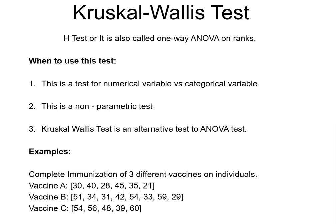The Kruskal-Wallis test is also known as the H test, and in some places it is also called one-way ANOVA on ranks. It is a non-parametric hypothesis test that compares three or more independent groups. It is basically used to determine if there is a statistically significant difference between the medians of three or more independent groups. The Kruskal-Wallis test is the non-parametric equivalent to the one-way ANOVA test.